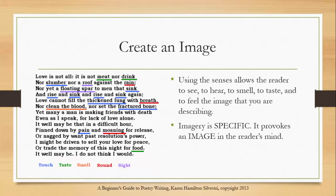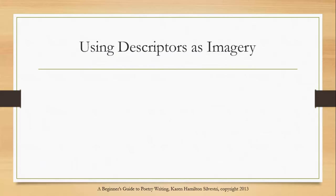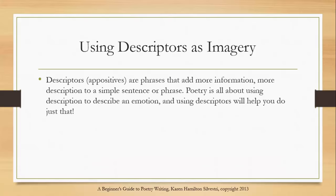You might want to take a moment and look through this poem where we've underlined all of the different senses being used. Another way to provide imagery in a poem is by using what we call descriptors. Descriptors are also called appositives, and these are phrases that simply add more information — they add a little bit more description to a simple sentence or phrase.